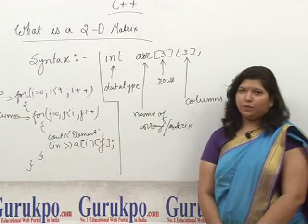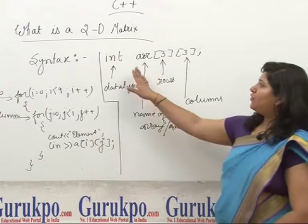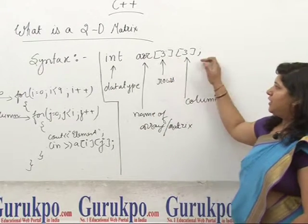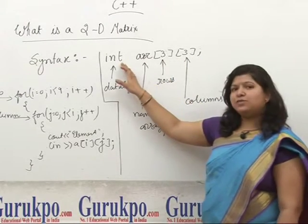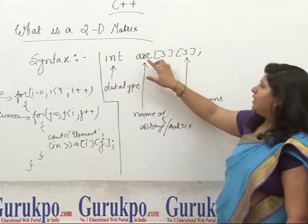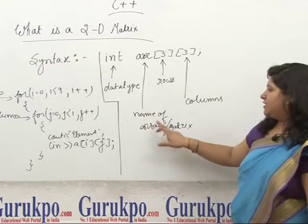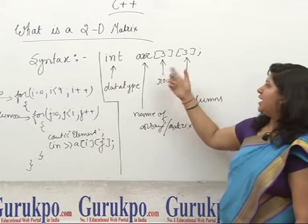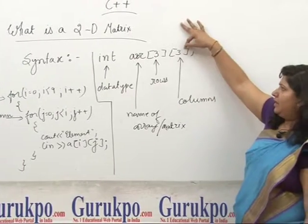Let us proceed with the syntax. How we can write this for initialization? In this example, 'integer' tells you about the data type we are using. Then 'ARR' is the name of the array - the name by which you will call this array.